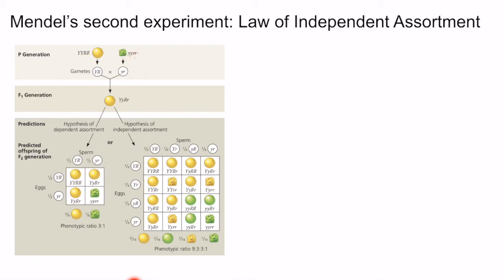In the parental generation, Mendel crossed two true breeding pea lines that differed in both of these characteristics — differing in both seed color and seed shape. One line consisted of yellow and round seeds with all dominant alleles, and the other consisted of green and wrinkled seeds with all recessive alleles. In the F1 generation, all individuals had a heterozygous genotype at both traits — big Y, small y, big R, small r. We can then carry out a cross of these F1 individuals to see how these characteristics are passed from parents to offspring.